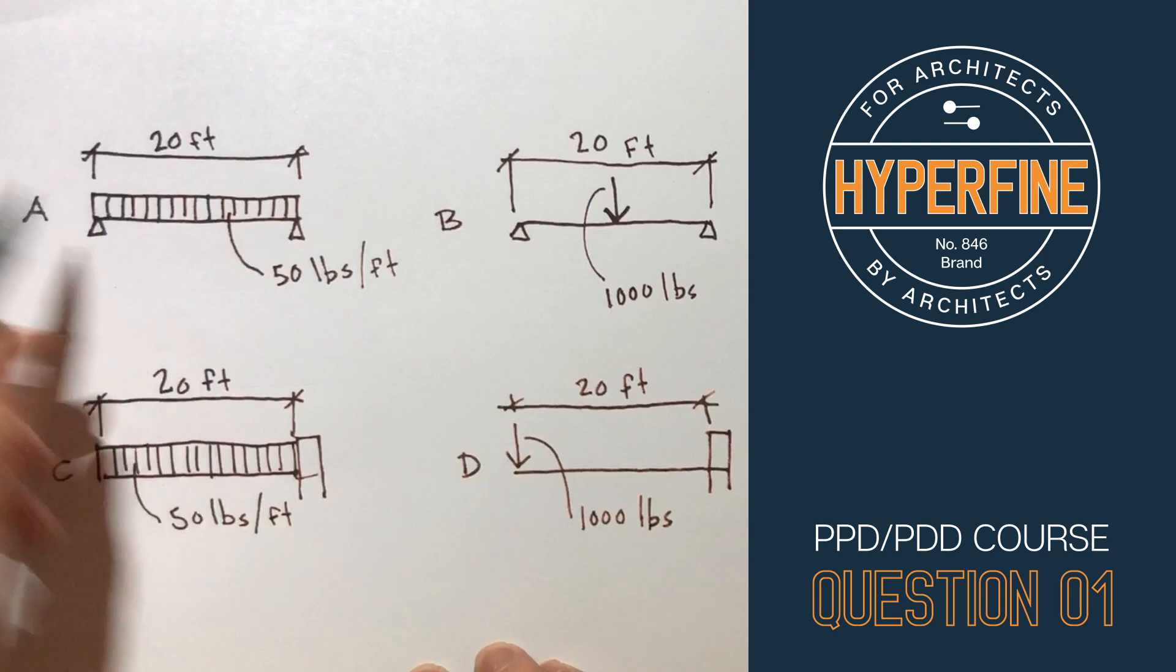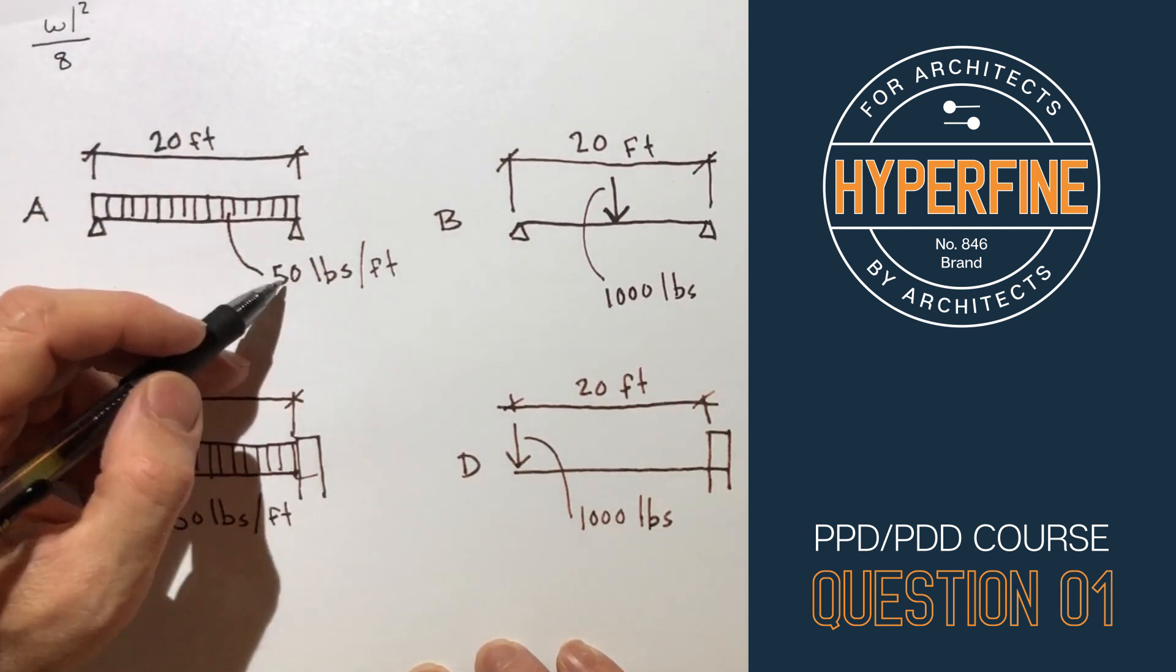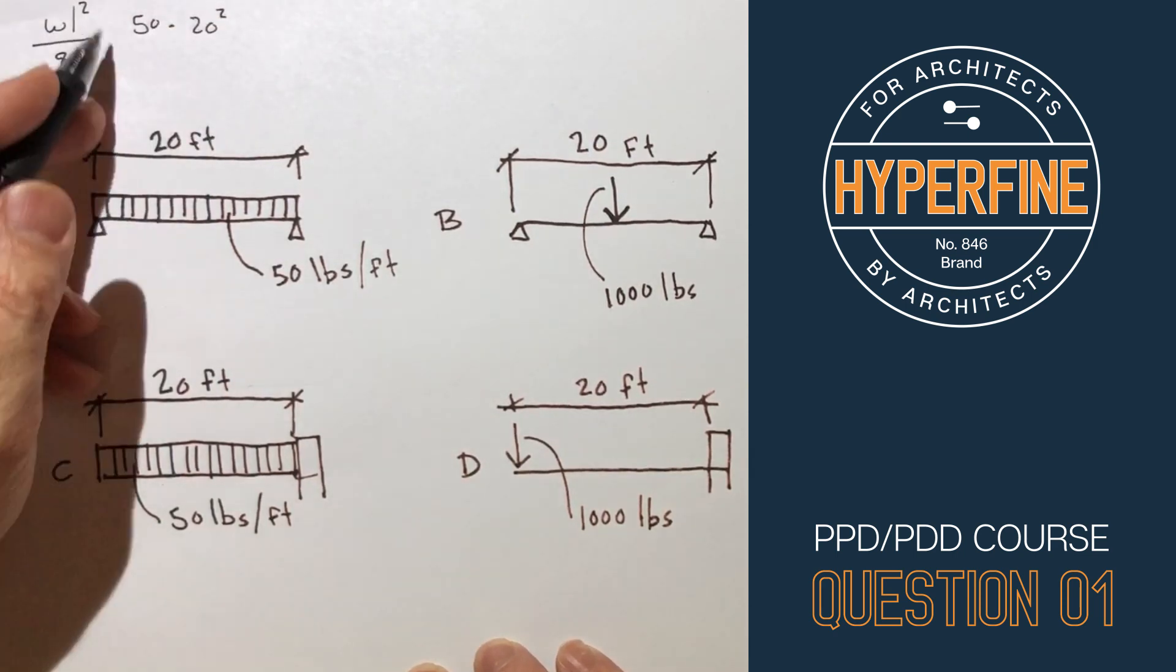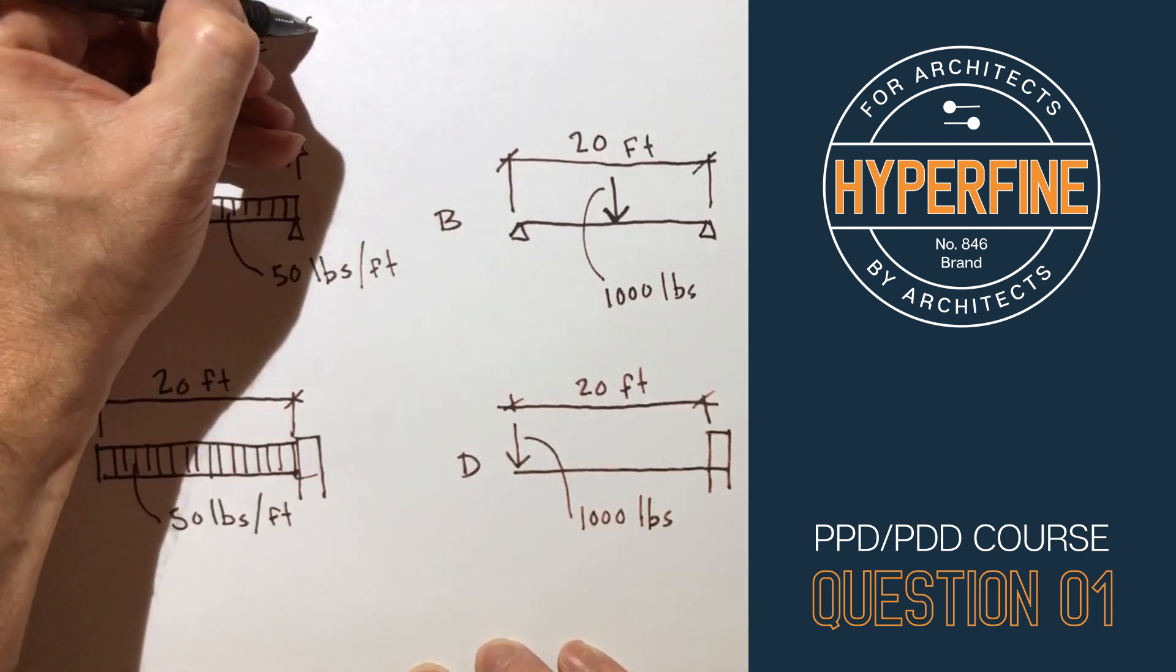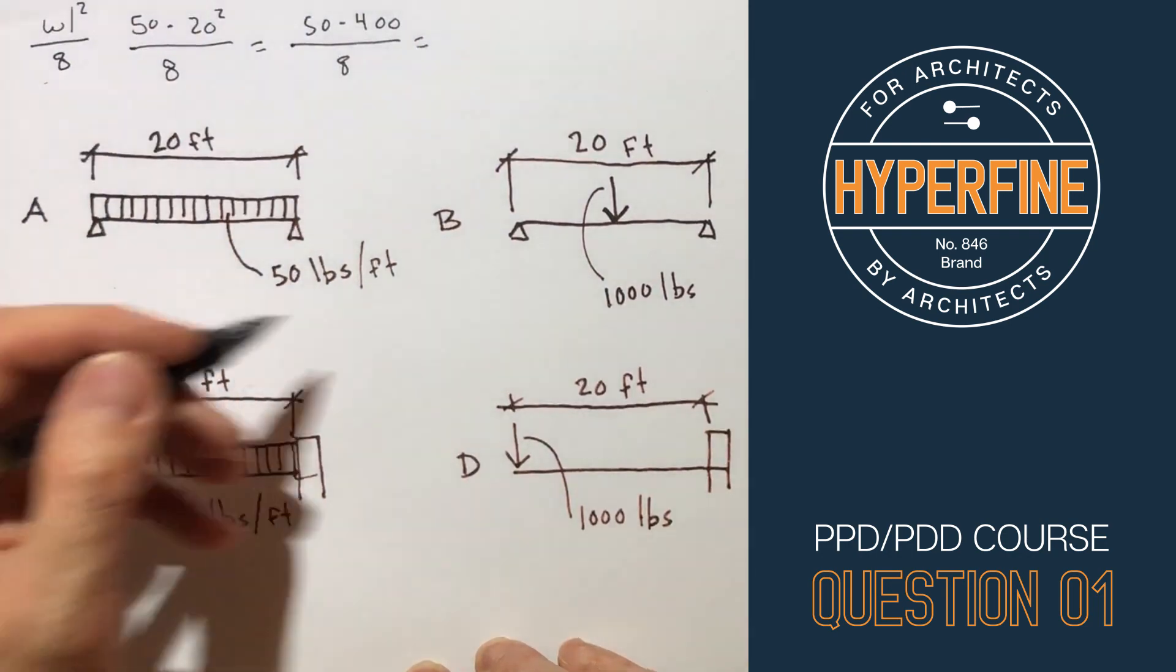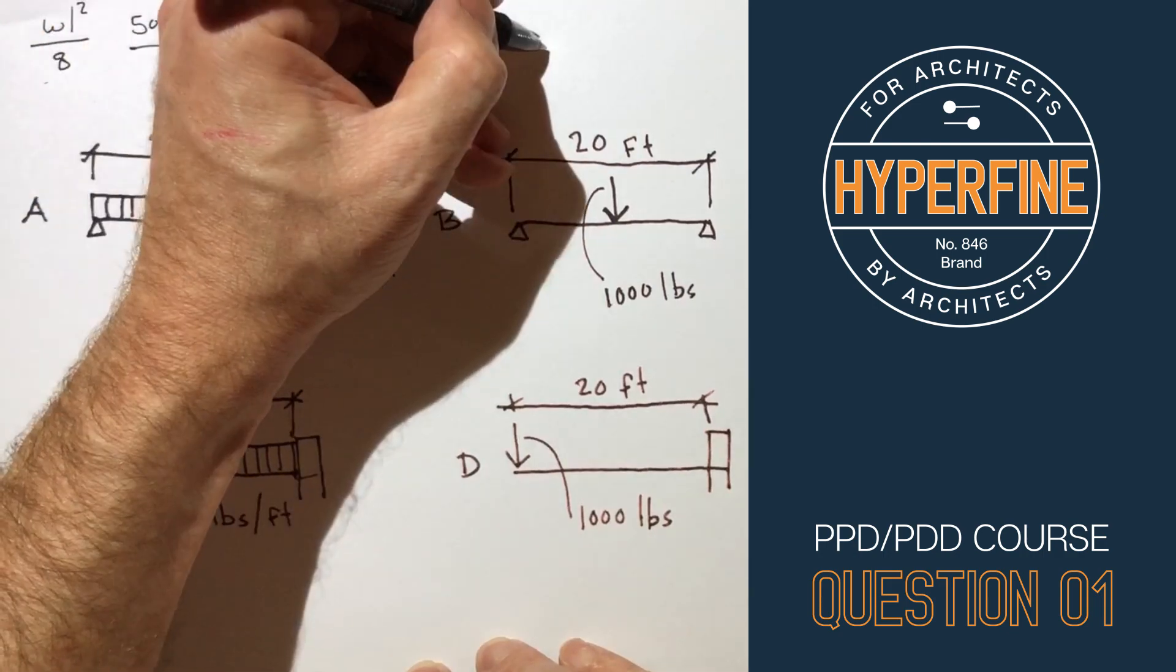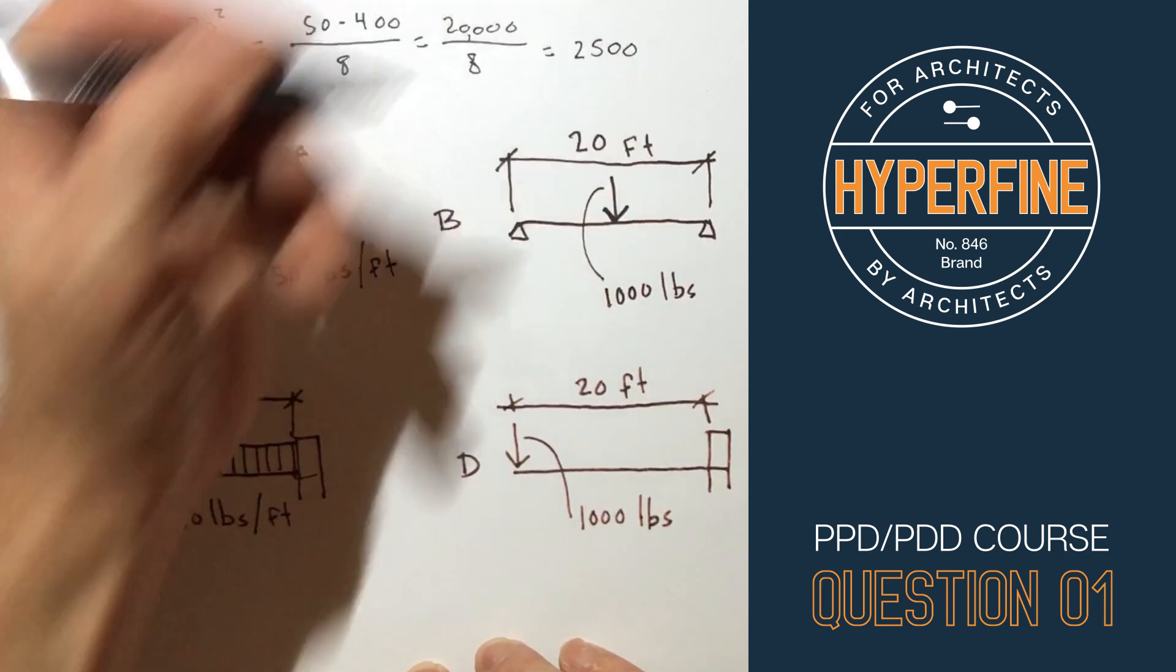If I'm gonna do the math for this, the moment is WL squared over 8. So small w is gonna be the pounds per foot, that's 50 times 20 feet squared over 8, that equals 50 times 400 over 8 which equals 20,000 over 8 which equals 2,500 and our units are foot pounds.